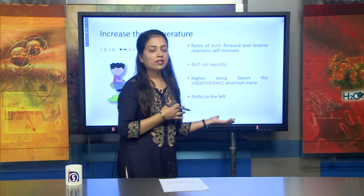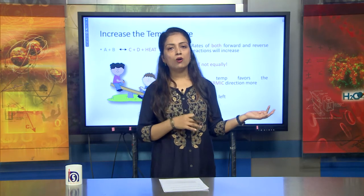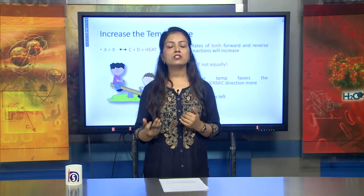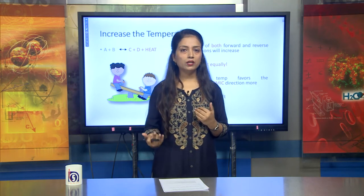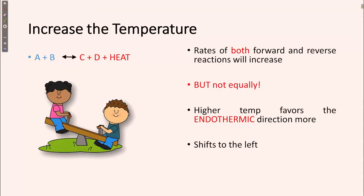Now we are going to discuss about temperature — how temperature affects the rate of equilibrium. As the temperature increases, consider the reaction A plus B converting to C plus D, where some amount of heat is evolved. This kind of reaction, where heat is evolved, is an exothermic reaction.